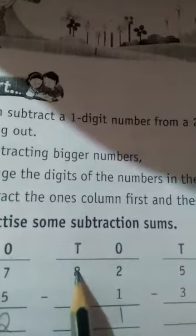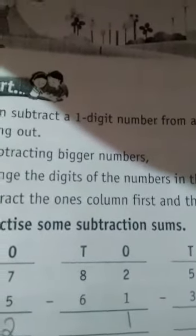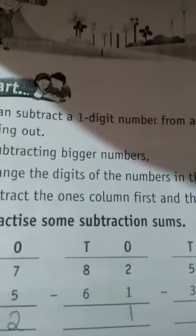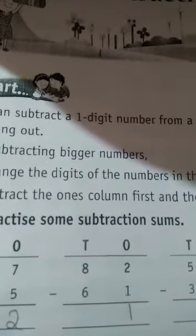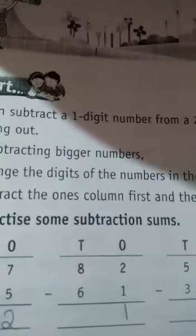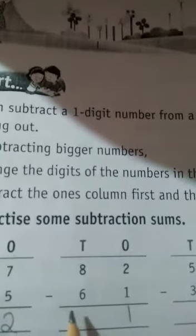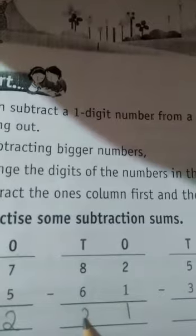Then the other number is 8 minus 6. 8 take in your hand and fold 6 fingers. So 1, 2, 3, 4, 5, 6. How many fingers are balanced? Here it's 2. So 8 minus 6 is 2. Clear?